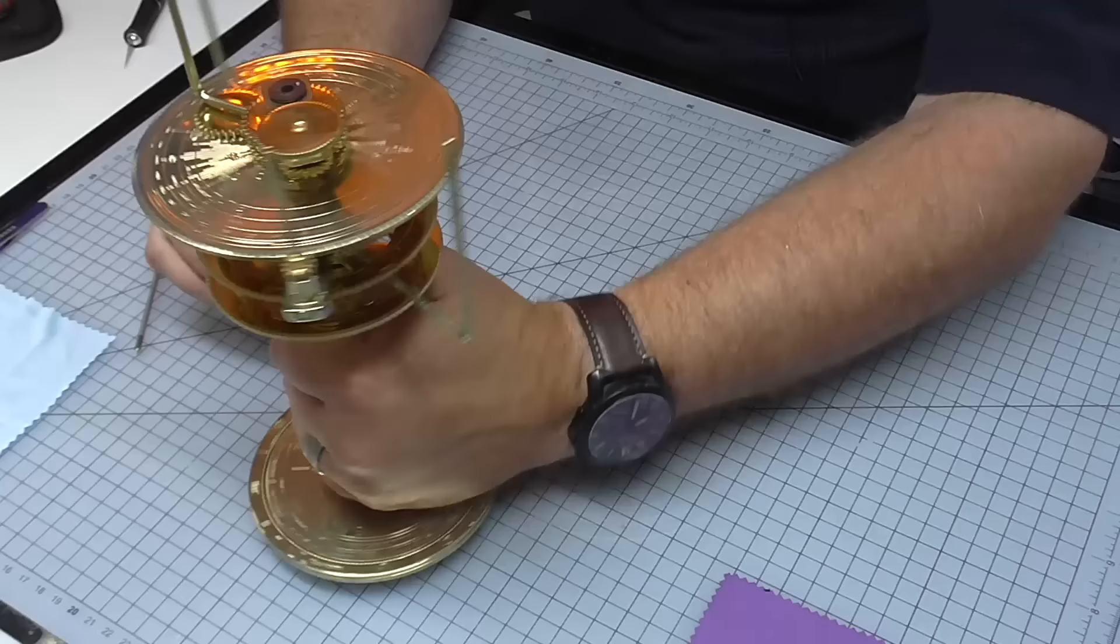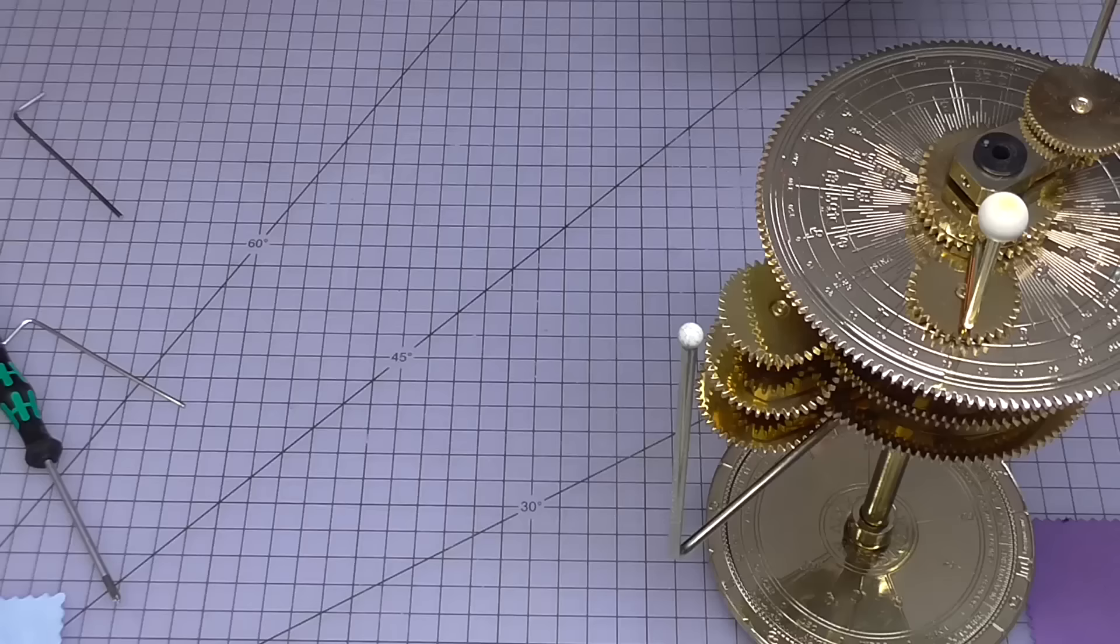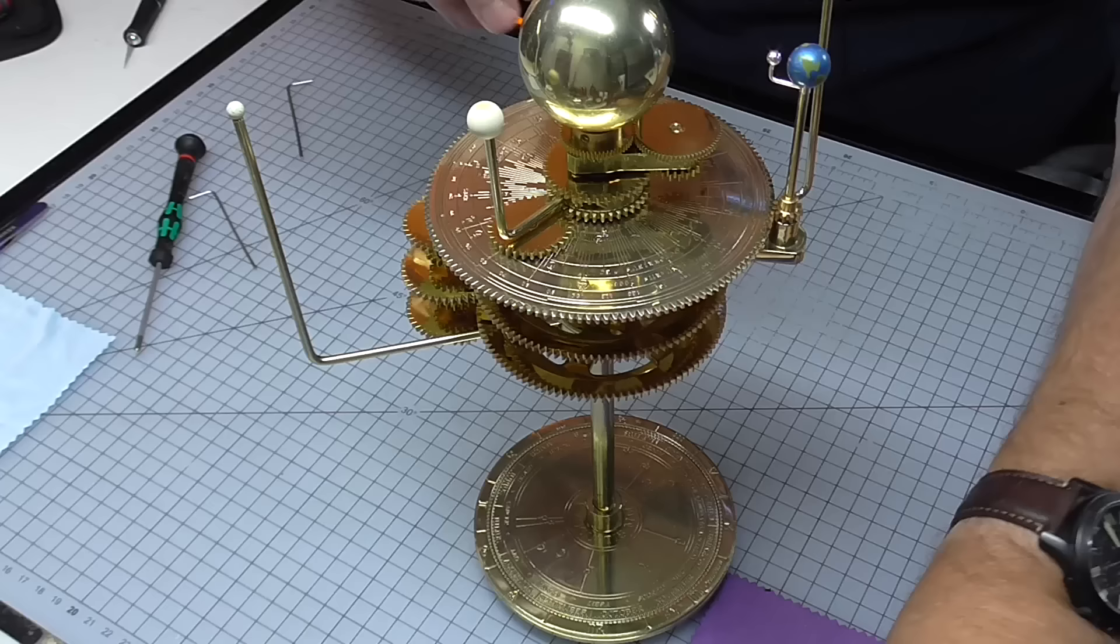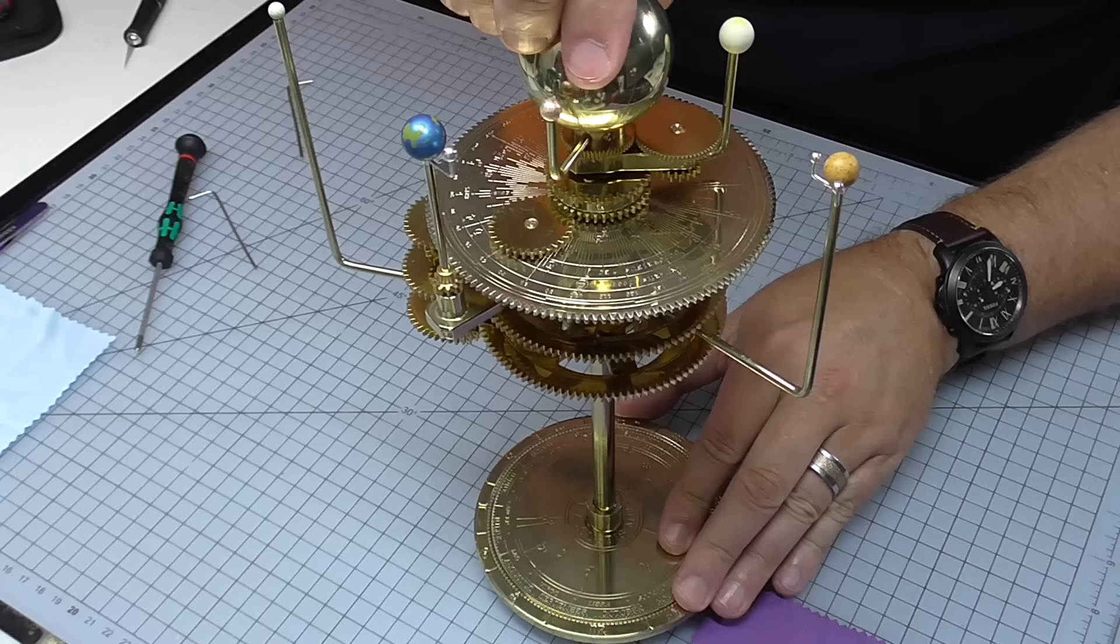So Ceres should just go in here. And I'll just put all the planets in where they go. Put the sun back down the top. And then just put mercury in here. And I'll just give it a slow spin just so you can see how that turns. No problems at all. And that's Ceres completed.